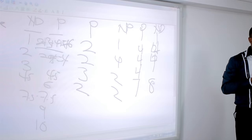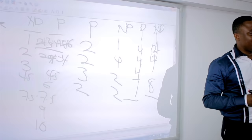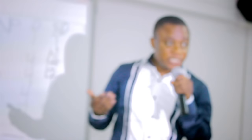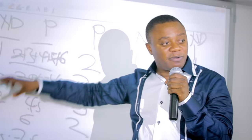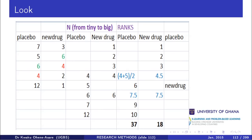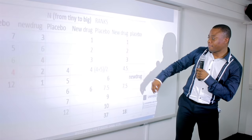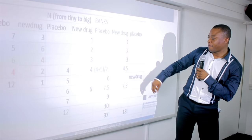Once the tied ranks are averaged and assigned, sum the ranks for each group and proceed with the final analysis. A student asks about vertical vs. horizontal arrangement: you must write values vertically — each value on its own row — regardless of which group it belongs to. As you go down, track which group each value comes from.